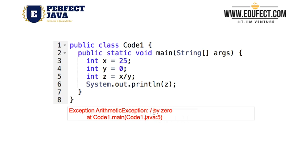The output shows: arithmetic exception, division by 0, and where did it occur? It occurred in Code1, in the main method, on line 5. So that is the information that Java shares with us when an exception occurs — it will tell us the class in which it occurred, the method in which it occurred, and the line number. In this case it was class Code1, method main, and line number 5. This is an example of an arithmetic exception happening.